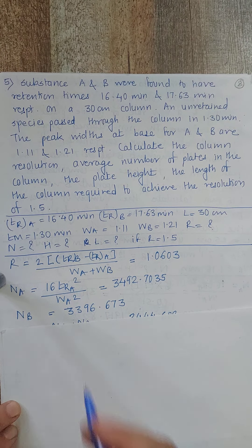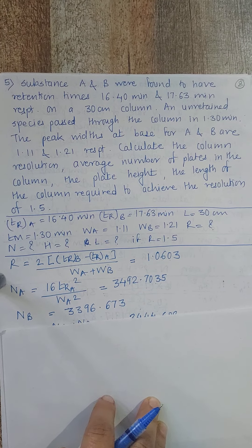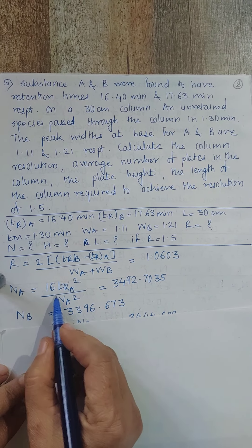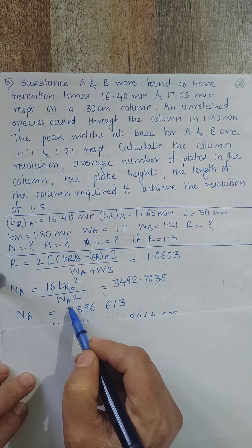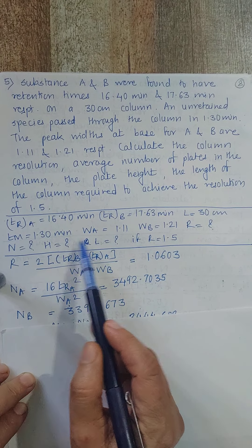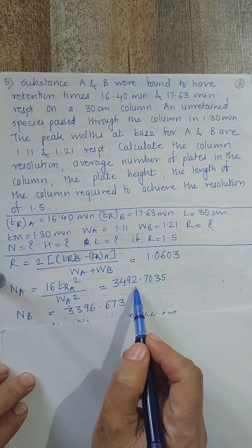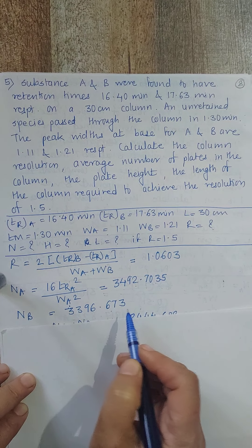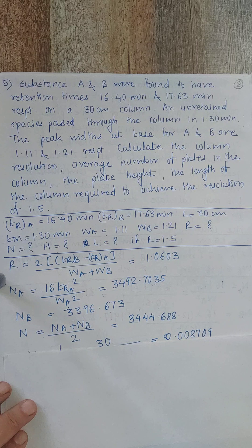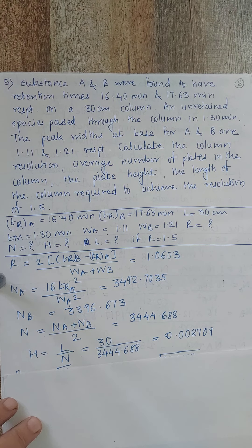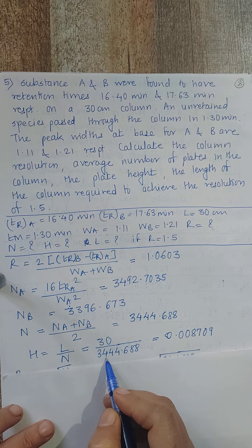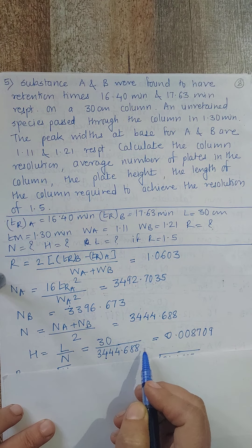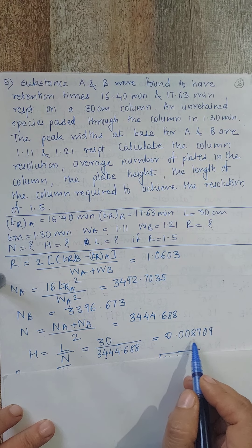Average N = (3492.7035 + 3396.673) / 2 = 3444.688. H = L / N = 30 / 3444.688 = 0.008709.